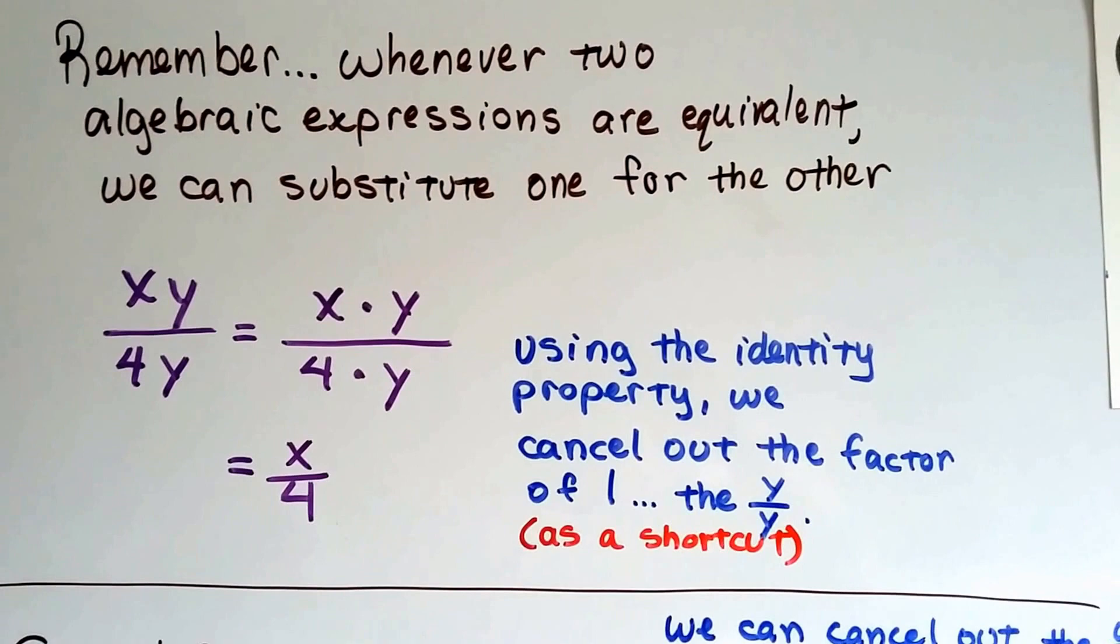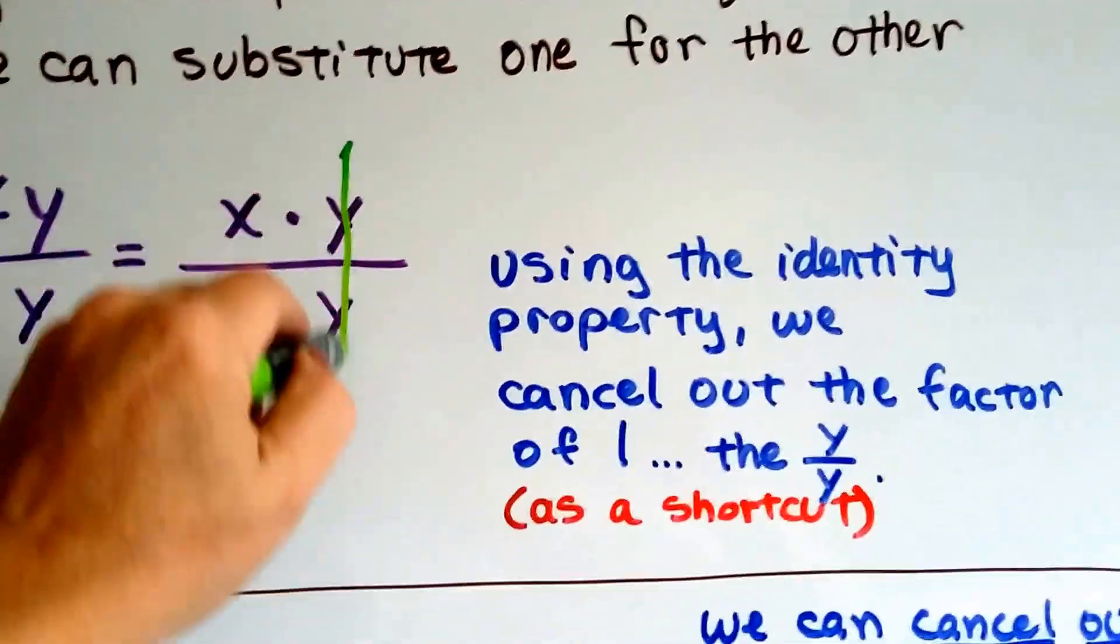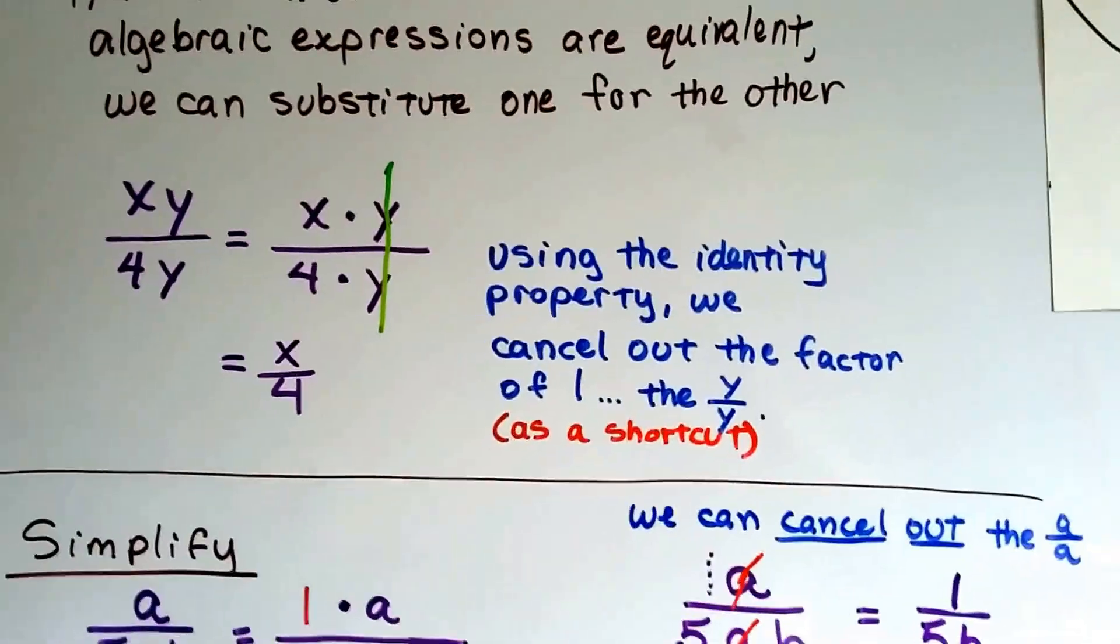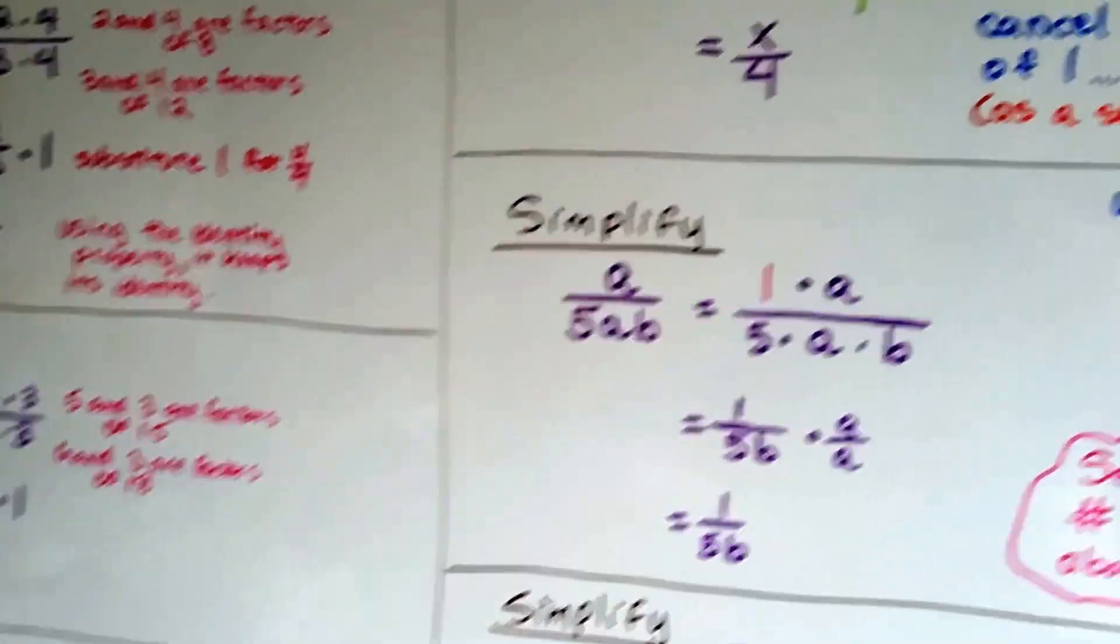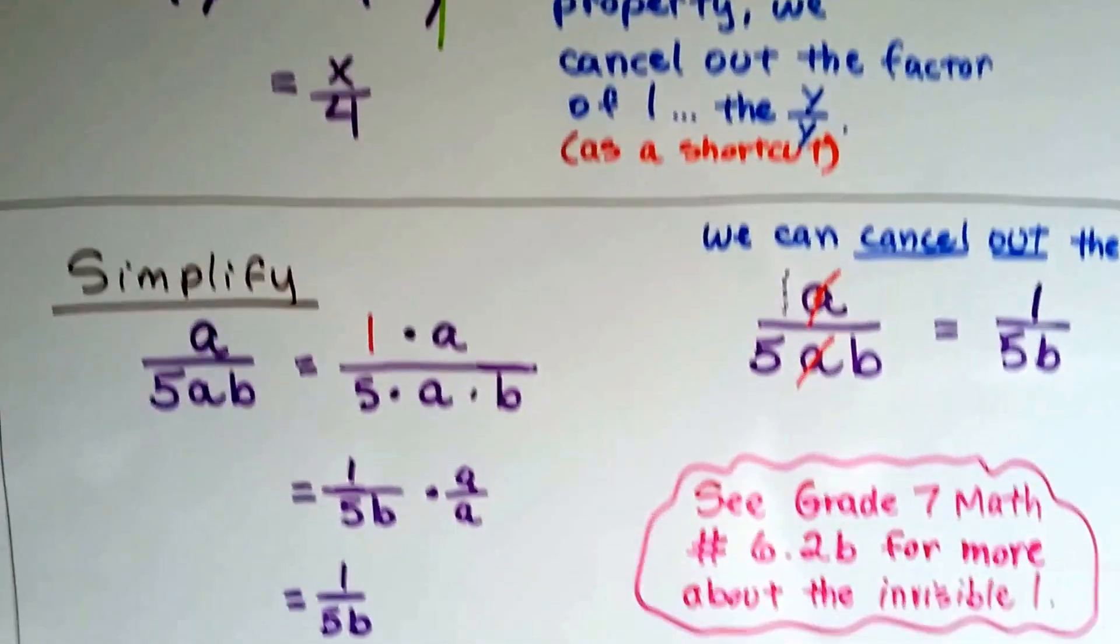So, we can just cancel out these as a shortcut. Instead of turning it into a 1 and then doing that, we can just draw a line through it and cancel it out.